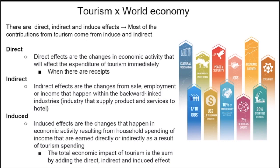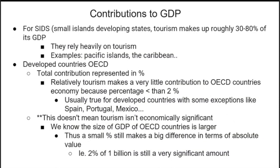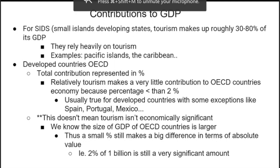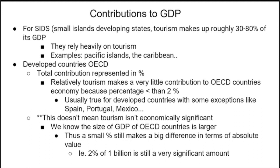The total economic impact of tourism is the sum of direct, indirect, and induced effects. Induced applies when, for example, a hotel receptionist earns their salary and then spends it elsewhere — that's why the majority of tourism's world economic impact comes from induced and indirect effects. For GDP contribution, in small island developing states (SIDS), tourism makes up around 30 to 80% of GDP — examples include the Pacific Islands and the Caribbean, where tourism is their main source of national income.